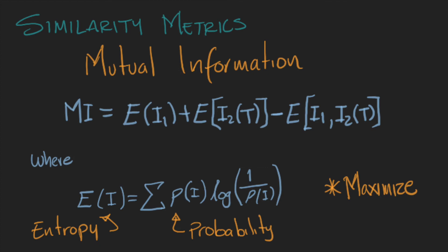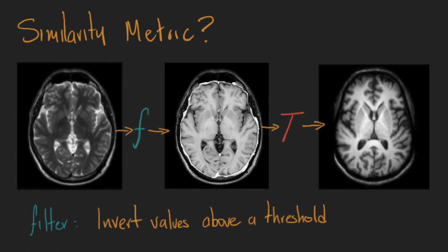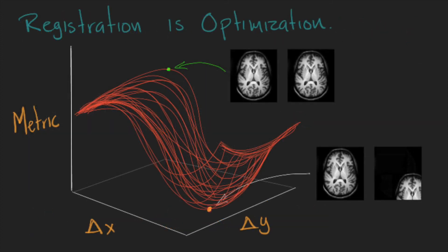But which metric should we use? Well, that depends on the type of image. When we try to align two different modalities that look really different, using correlation might not be the best option. However, we can apply filters that help make the two images look a bit more similar before calculating the similarity. In any case, image registration is a problem of optimization, because we need to search for the transformation that either minimizes or maximizes the objective function.